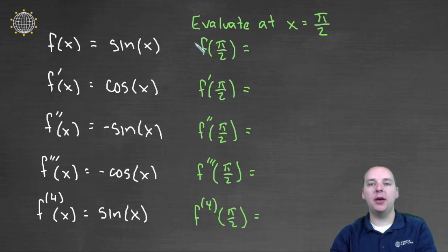What are these evaluated at pi over two? If you think about your unit circle, sine of pi over two is one. Cosine of pi over two is zero. Negative sine at pi over two would make negative one. Negative cosine at pi over two would make zero. And sine at pi over two again is one. So these are f of c, f prime at c, f double prime at c: one, zero, negative one, zero, one.